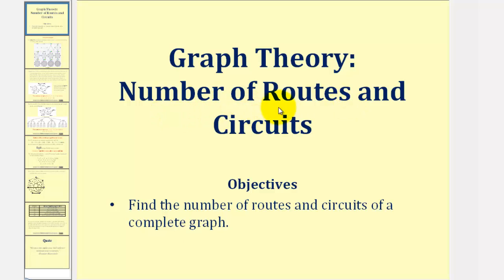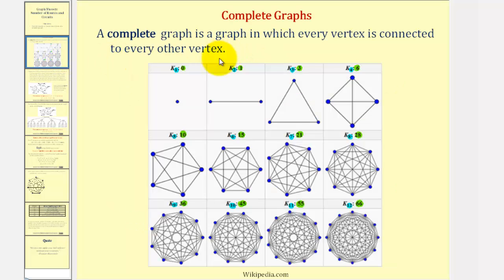Welcome to a lesson on the number of routes and circuits of a complete graph. A complete graph is a graph in which every vertex is connected to every other vertex.